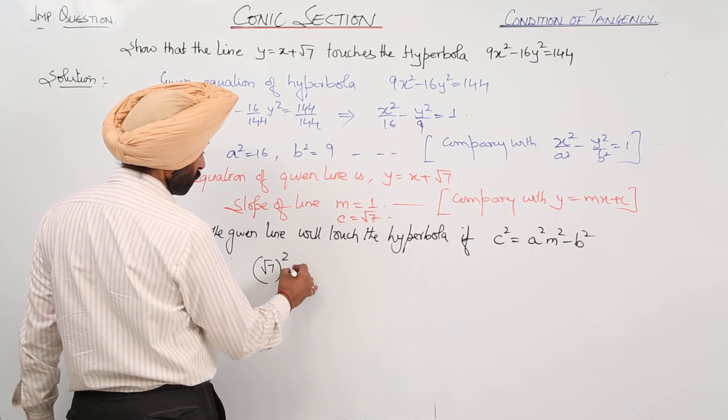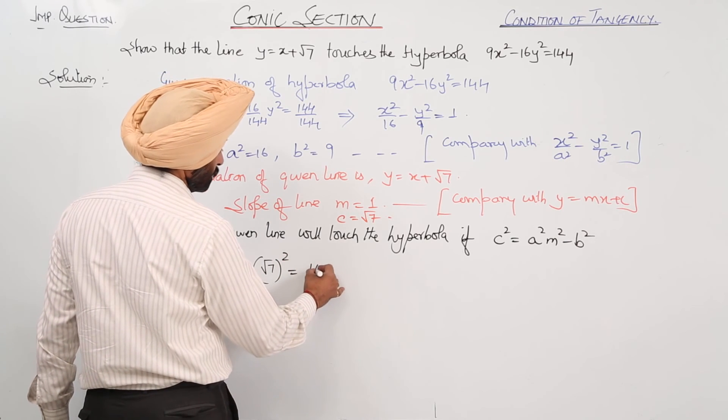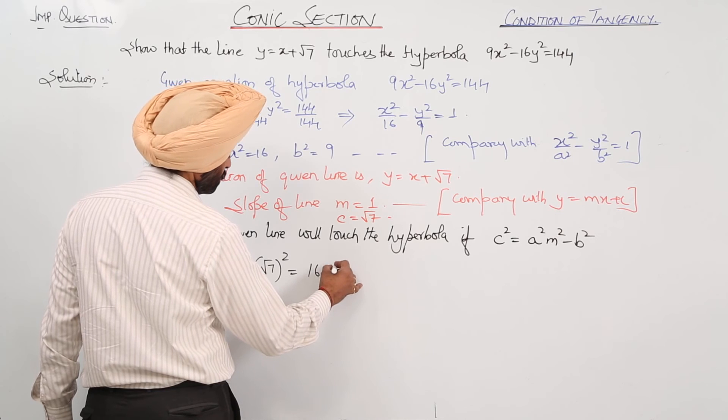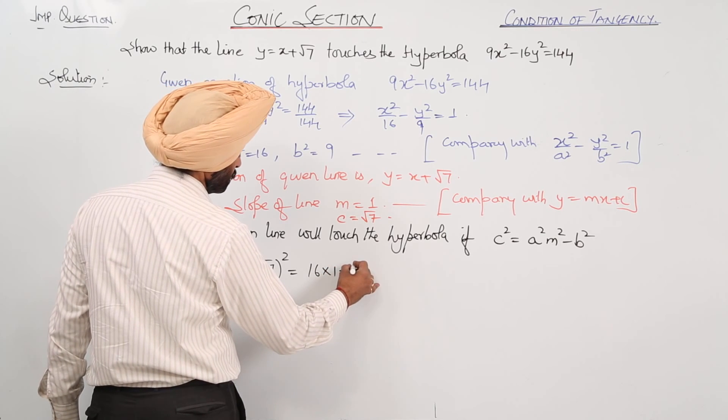Root 7 whole square equals a square, 16 times 1 minus 9.